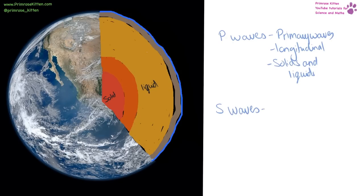S waves are secondary waves. They are transverse waves. And they can only go through solids, so they can't go through liquids. And because of these two different types of waves and how they're detected on the opposite side of the earth, this tells us information about the structure of the earth.